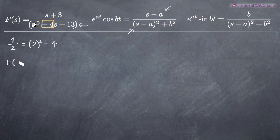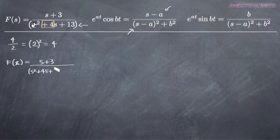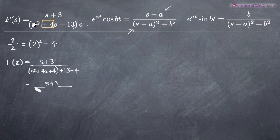So now f of s has in the numerator s plus 3, and in the denominator we pair s squared plus 4s plus 4, which completes the square, plus 13. Since we added 4 to the denominator, we also subtract 4 so we haven't fundamentally changed the function. So s squared plus 4s plus 4 factors as s plus 2 squared, and then plus 13 minus 4 gives us plus 9.